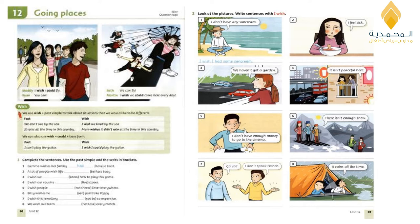Number seven: 'I wish this jewelry wasn't so expensive' — simple past of 'be' is 'was,' negated as 'wasn't.' Number eight: 'We wish our team didn't lose every match' — negate simple past using 'didn't.' Now move to page 87, exercise number two: look at the pictures and write sentences with 'I wish.' Inside each picture we have the fact, and we have to write the wish.